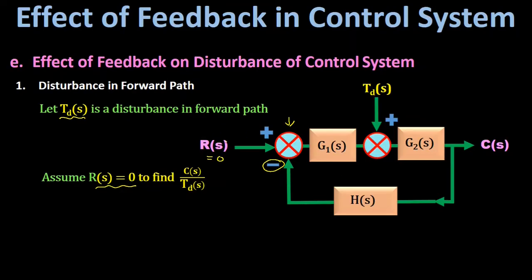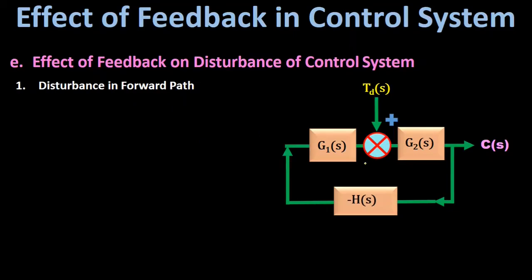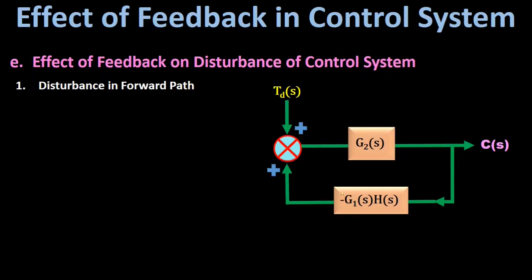After removing the input response R(s), the block diagram changes. We can see that gain G1(s) is in series with minus H(s). When two gains are in series, the resultant gain is their product. So multiplying both gains gives minus G1(s)·H(s), and the block diagram now looks like this.